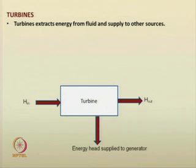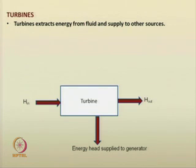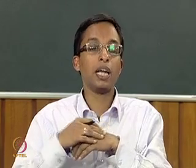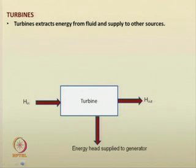Turbines extract energy from the fluid and supply it to other sources — the function opposite to a pump. A pump takes energy from an external source and supplies it to the fluid, whereas in a turbine you take energy from the fluid and supply it to some other object.